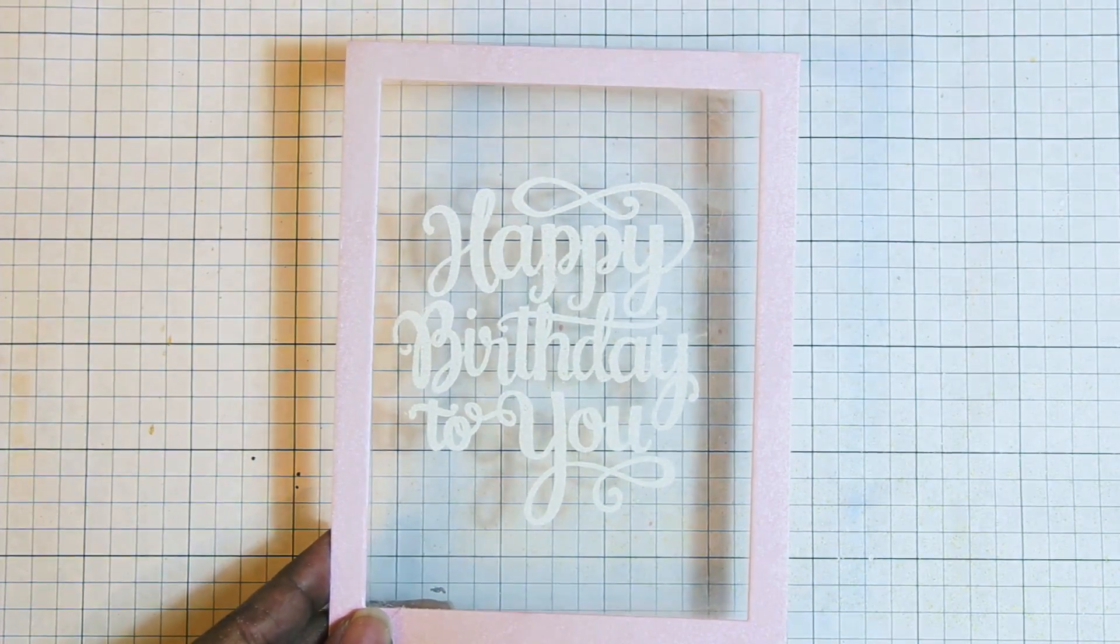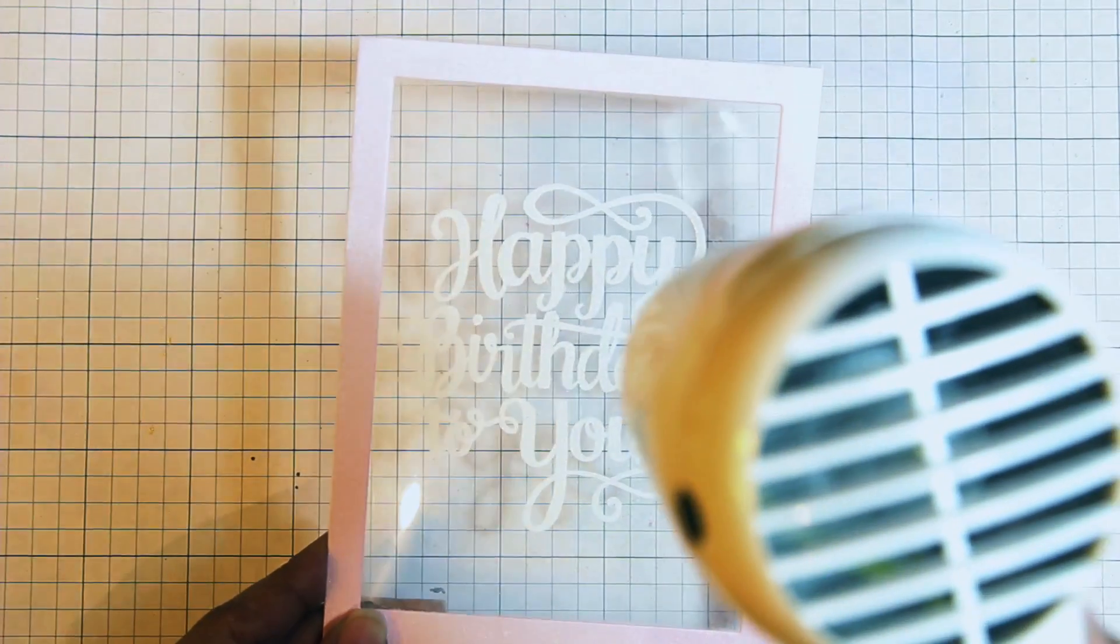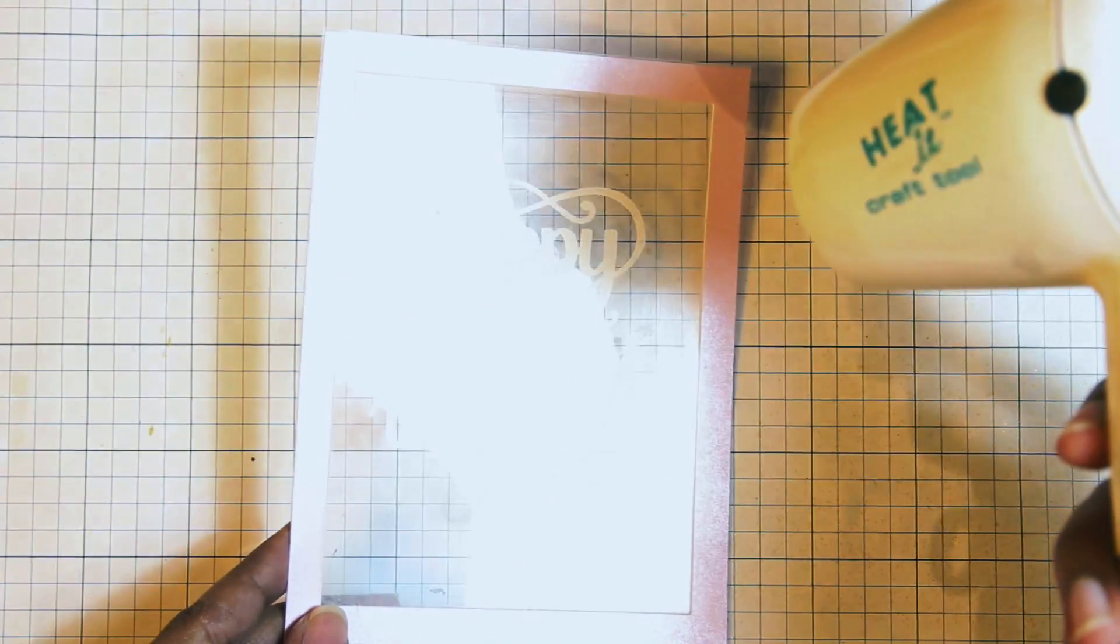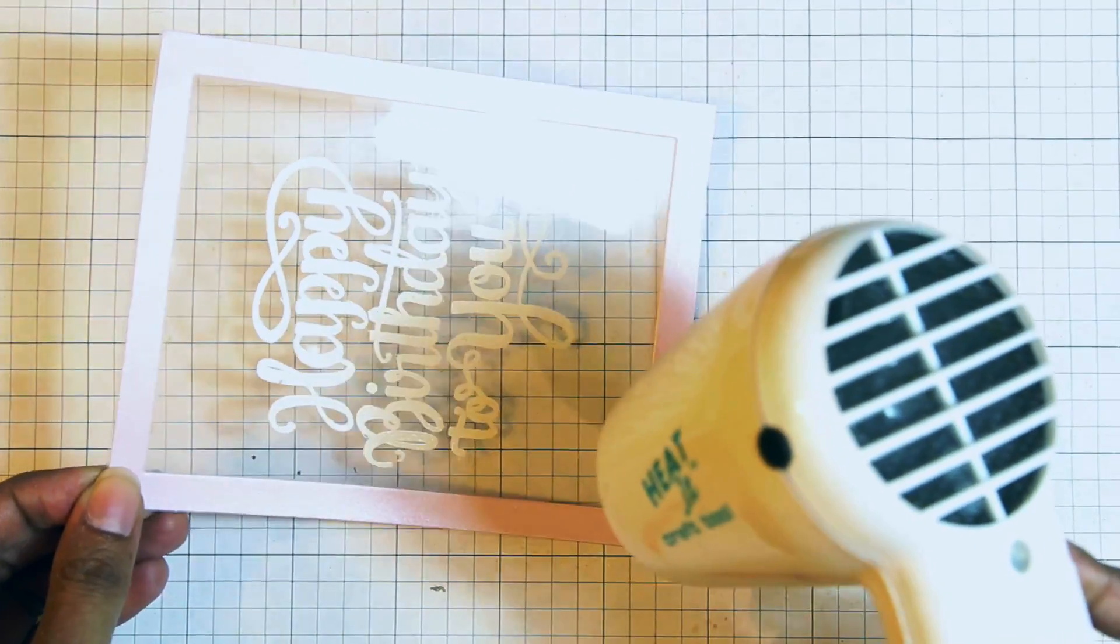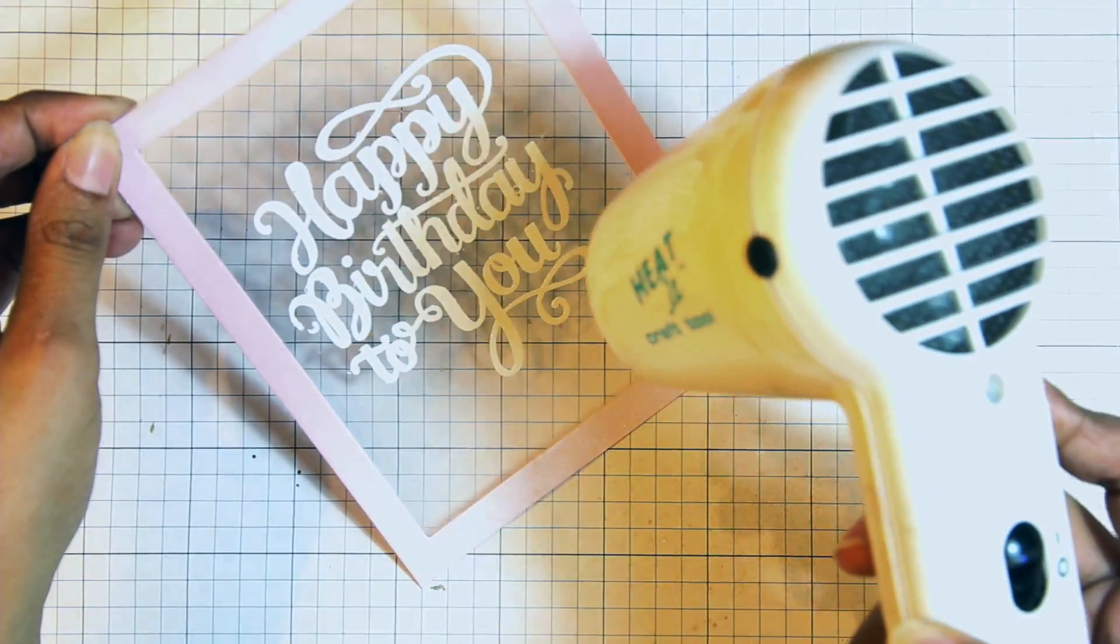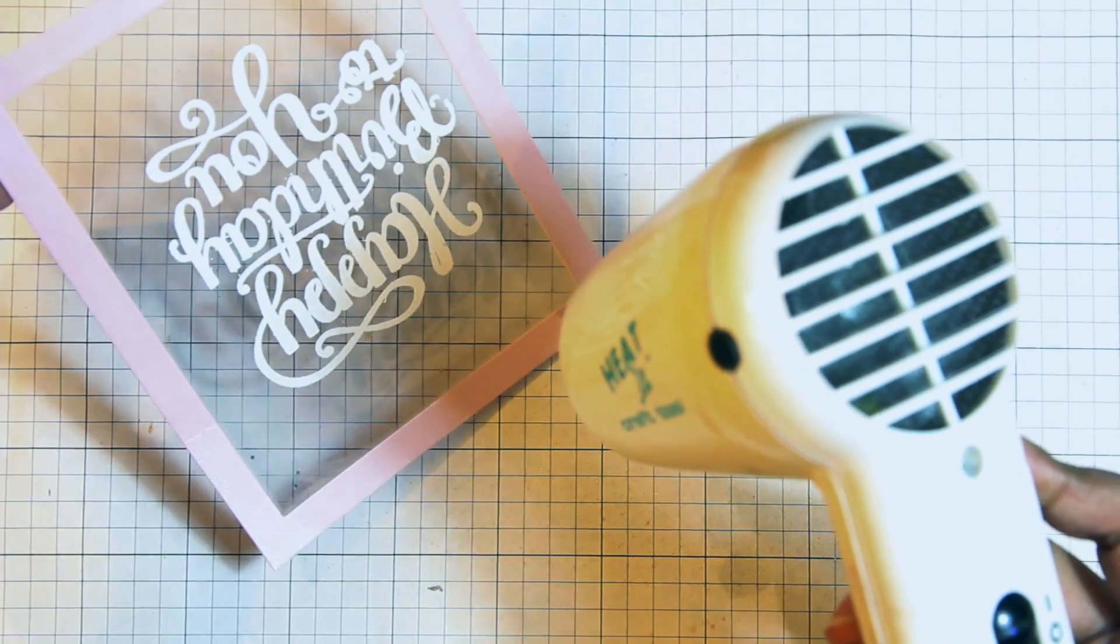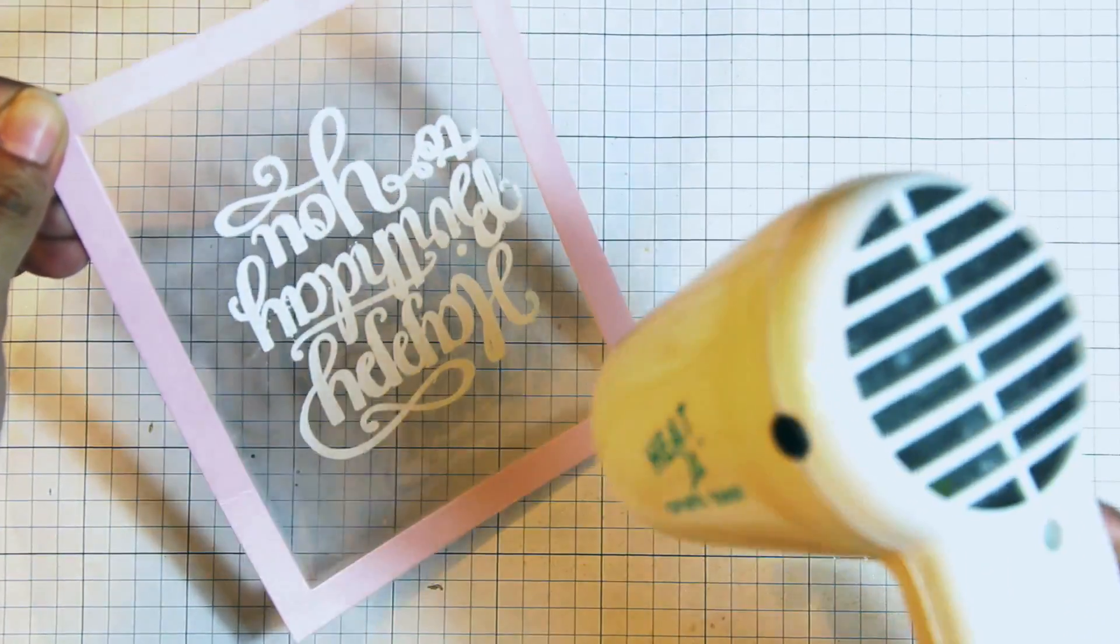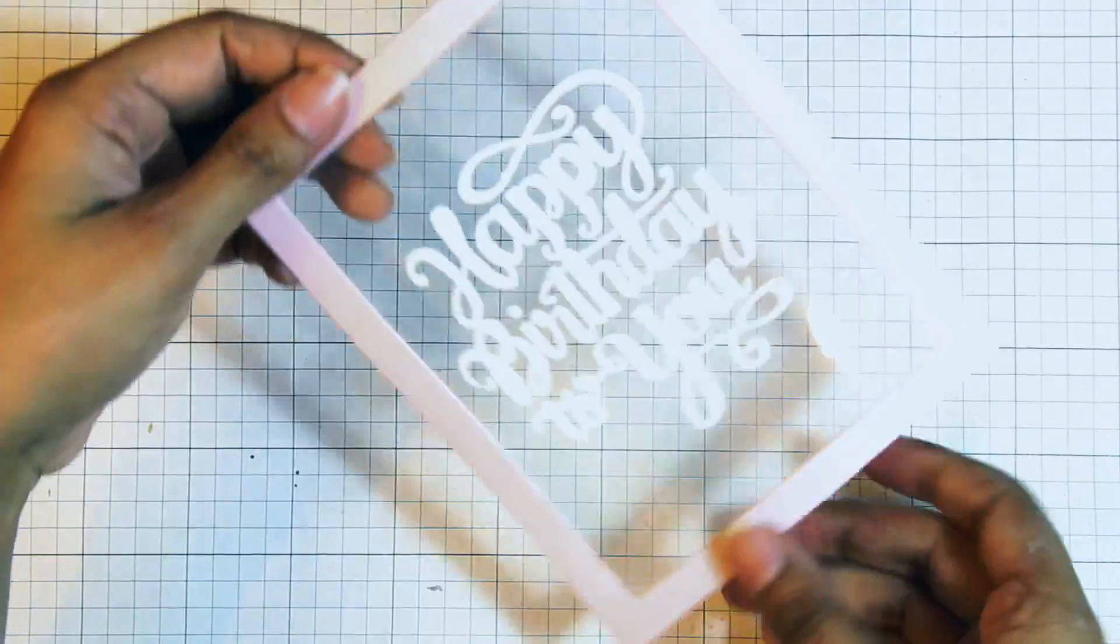Before actually heat embossing, I'm just going to heat up my heat tool for a few seconds to make sure that it's good and hot before I actually apply it to the acetate. Not only will this help the powder melt faster, but it will also minimize the risk of that acetate warping from the heat. So you want to just get the heat embossing tool good and hot and then heat the powder very quickly. You also want to make sure that you're not heating the same place for too long. Keep moving that acetate around and hopefully it will help minimize the warping.